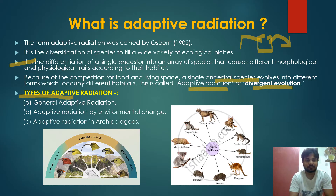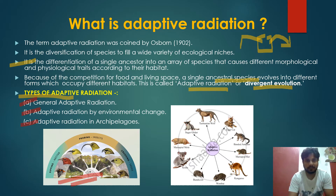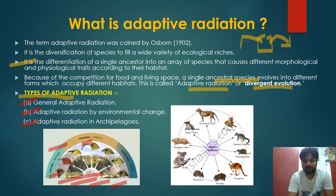There are three types of adaptive radiation: general adaptive radiation, adaptive radiation by environmental changes, and adaptive radiation in archipelagos. The best example of adaptive radiation is shown by the Galapagos finches, also called Darwin's finches — their beak structures vary greatly though their ancestor is common. The same goes for marsupials, which adapted to different niches and environments.